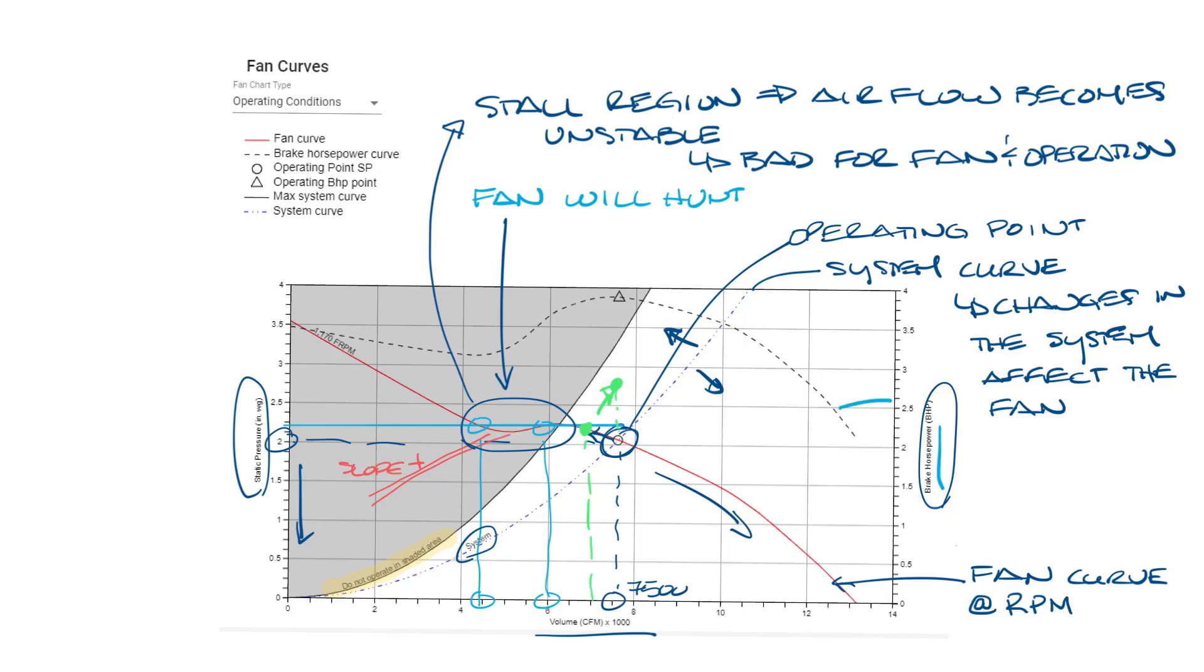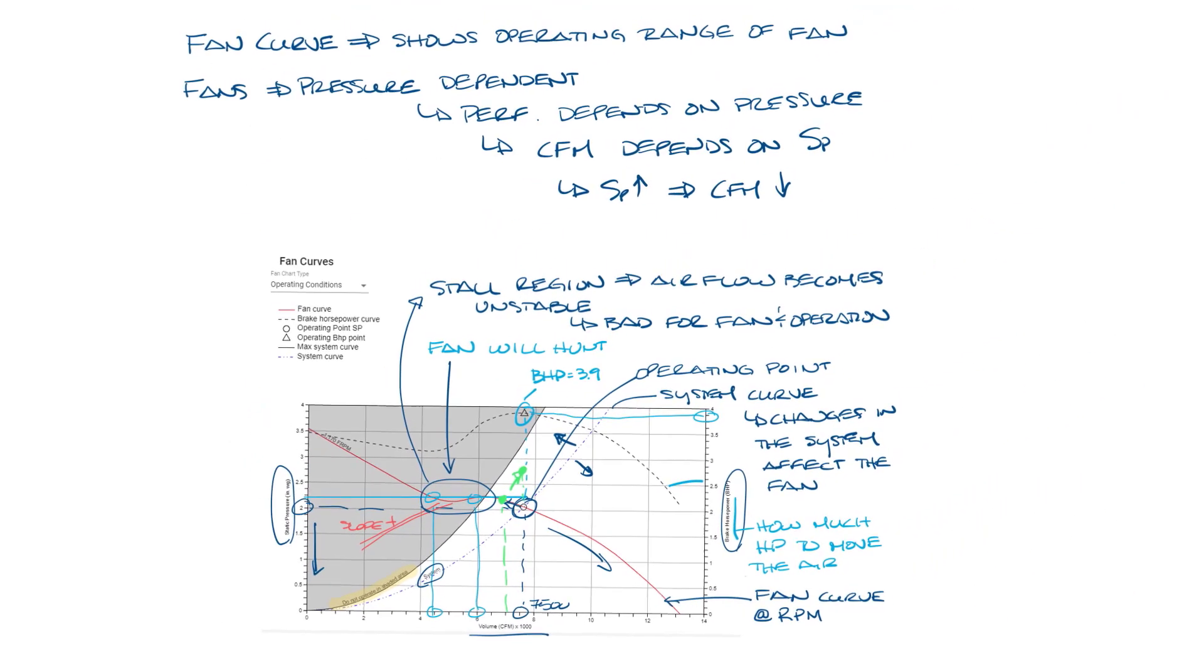Next, we have this dashed line up here. This is the brake horsepower curve. This shows how much power it'll take to move the air. To find this point, you basically draw a line straight up or down from the operating point. So this shows that it'll take about 3.9 horsepower to operate the fan in these conditions. Let's bring it all back on the screen.